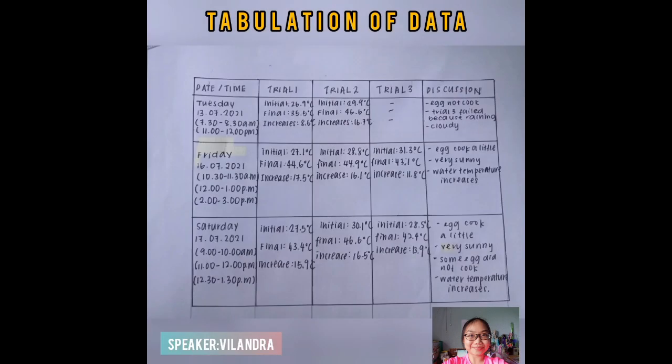This is the 2nd tabulation of data. This table also consists of date and time, all 3 trials, and discussion. The observation is also the same — the egg was not cooked on the 1st and 2nd day, but on the 3rd day the egg had started to cook a little.